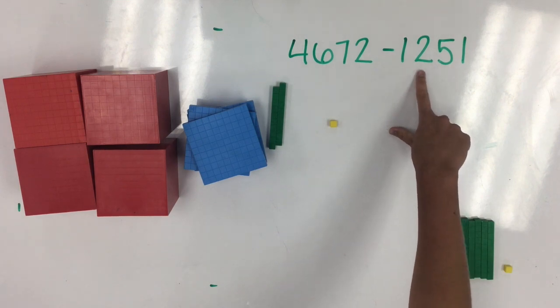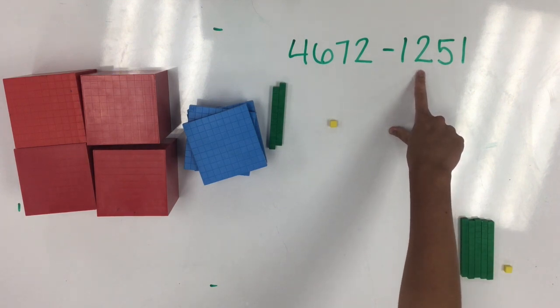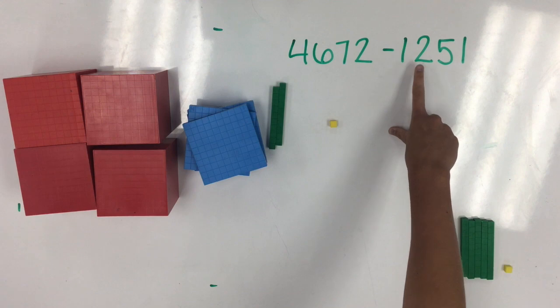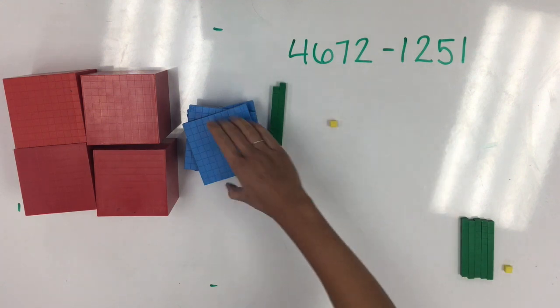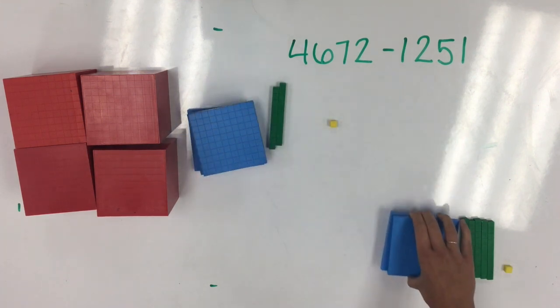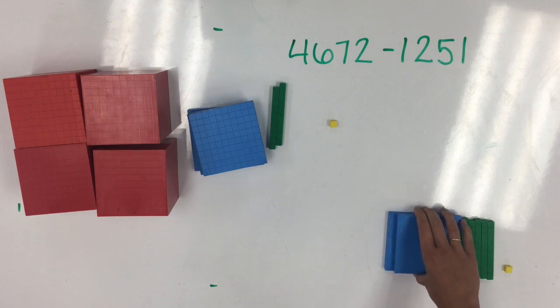Next, we move to the hundreds place. Because there are 2 one-hundreds in the hundreds place, I'll take away 2 hundreds from my starting number.